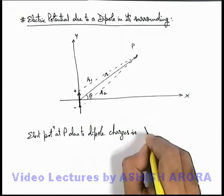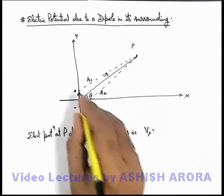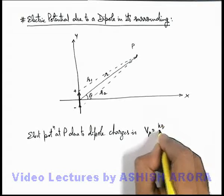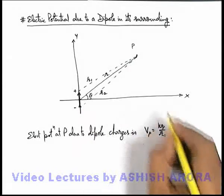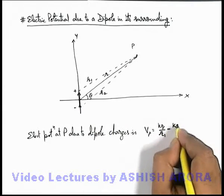This Vp we can write as simply due to positive charge it is kq by r1, and due to negative charge it is minus kq by r2.